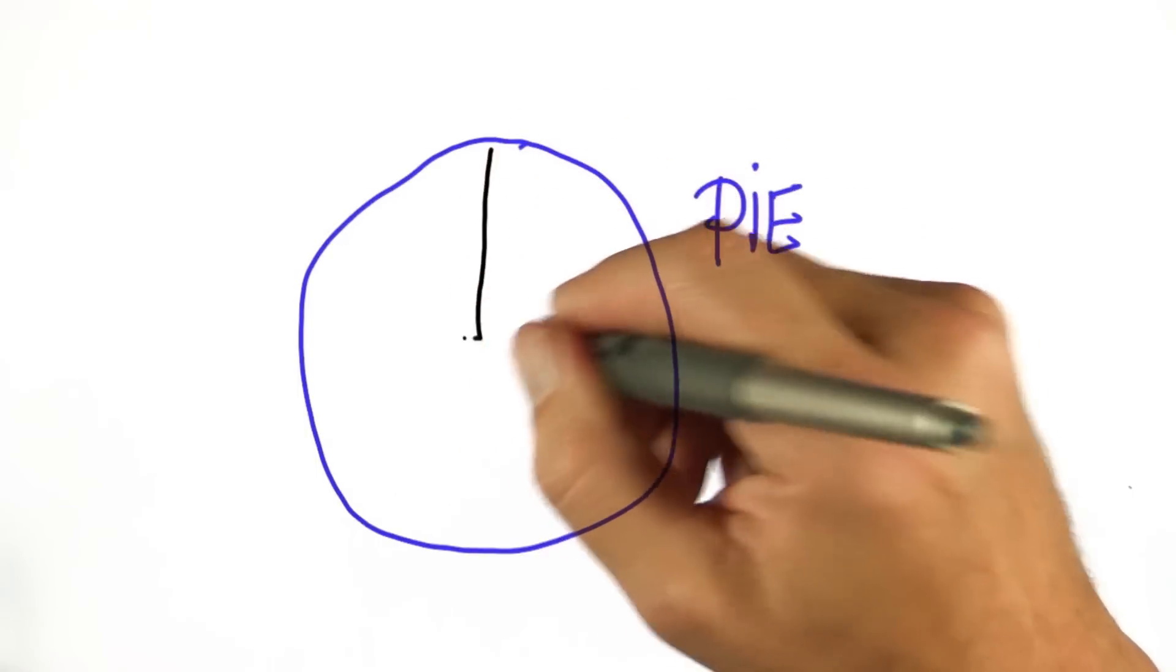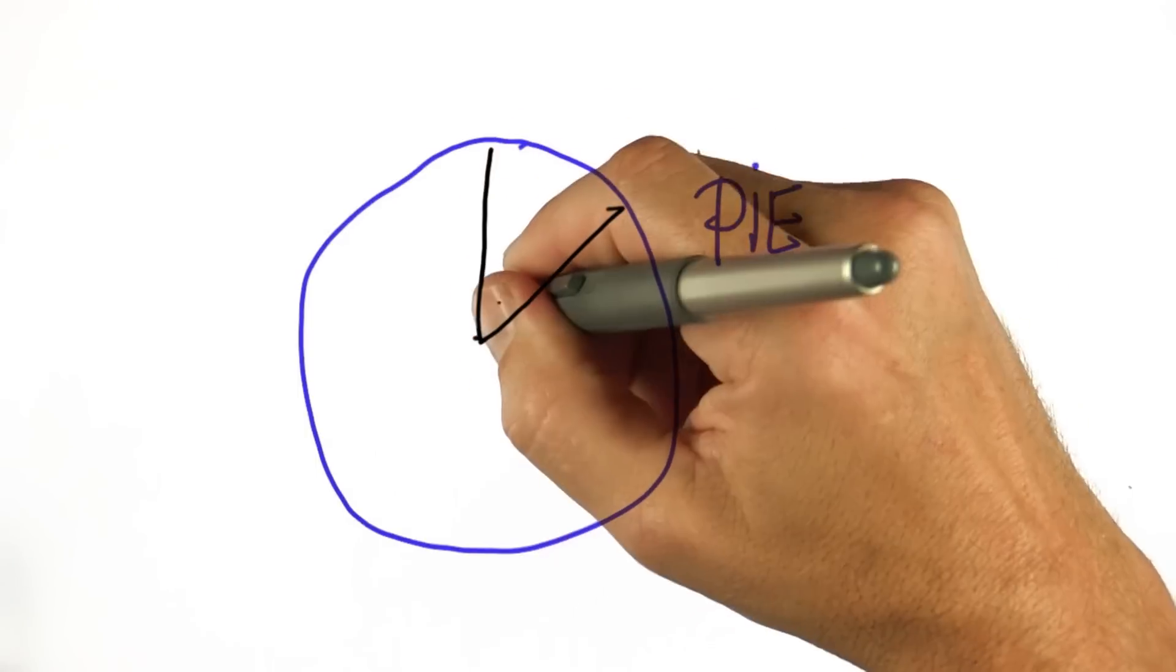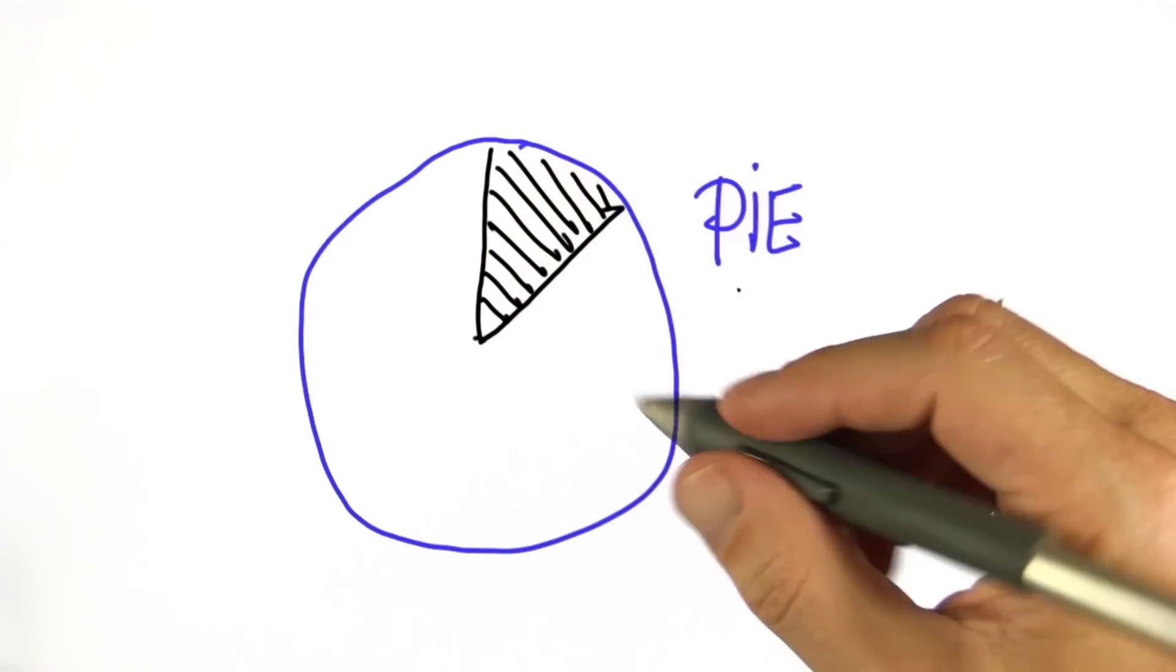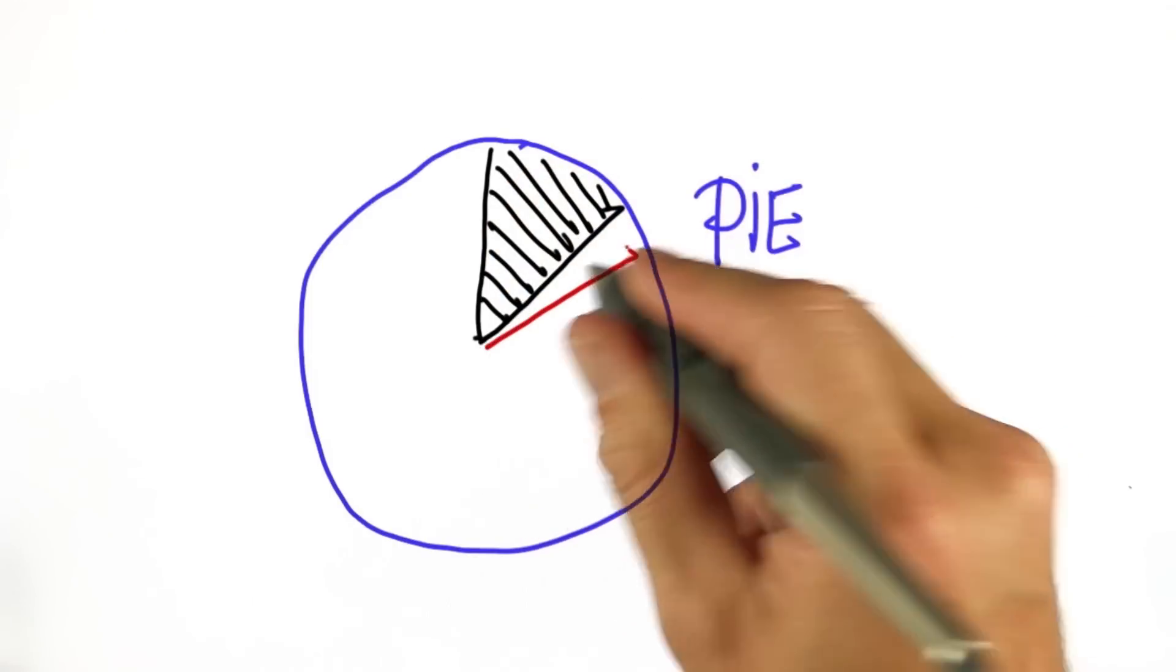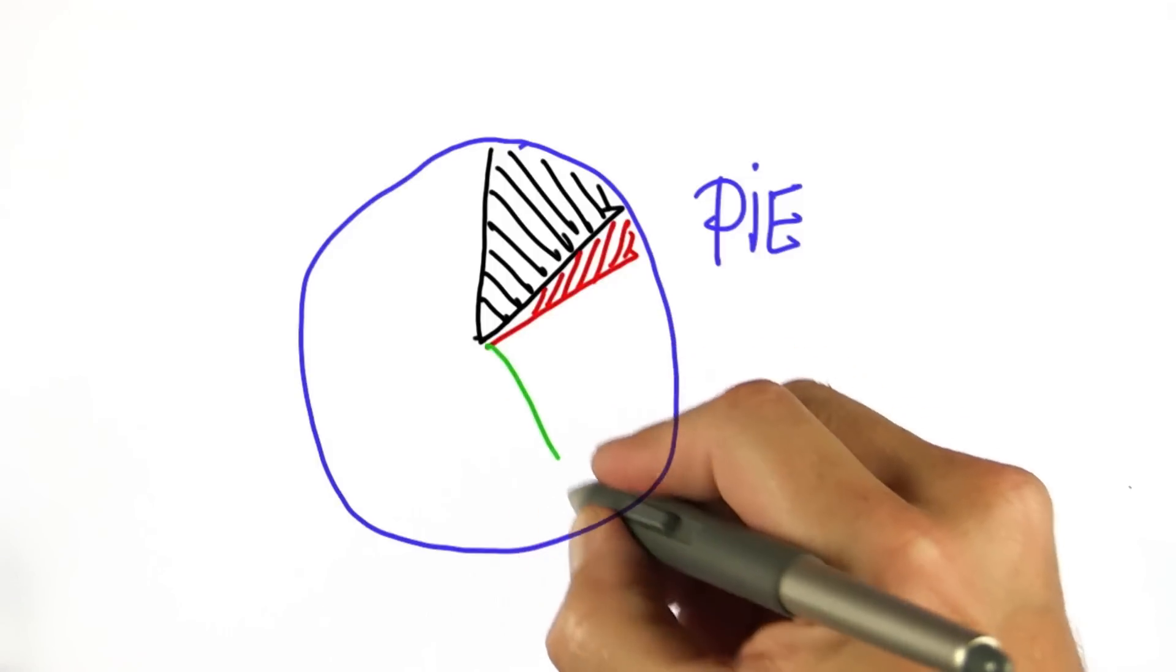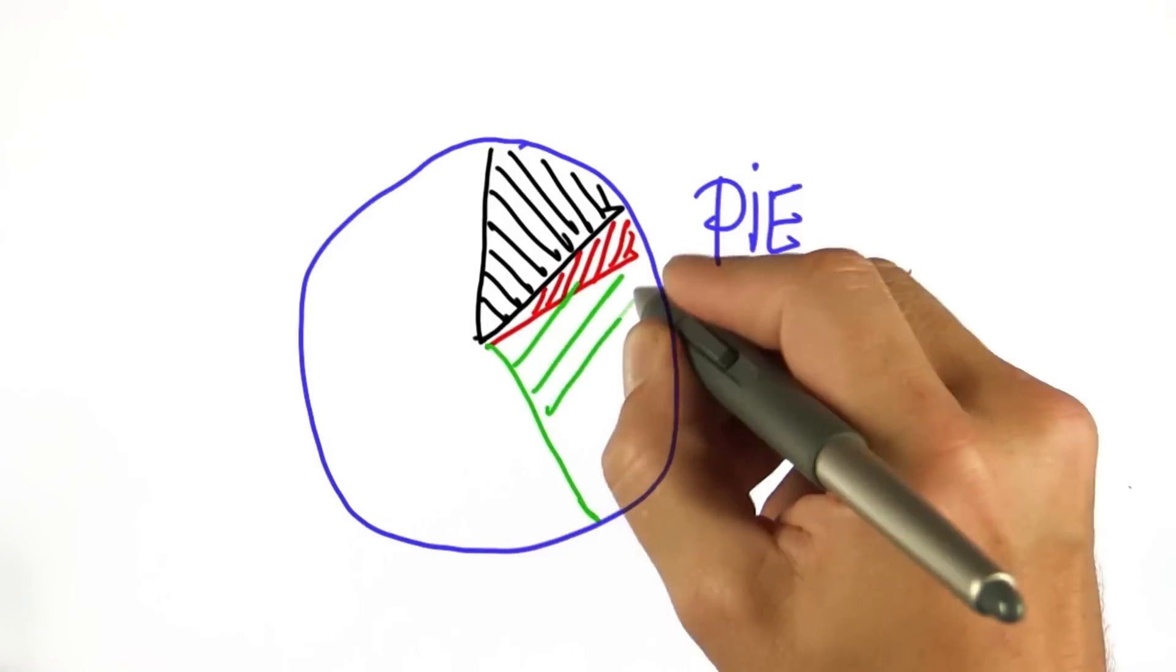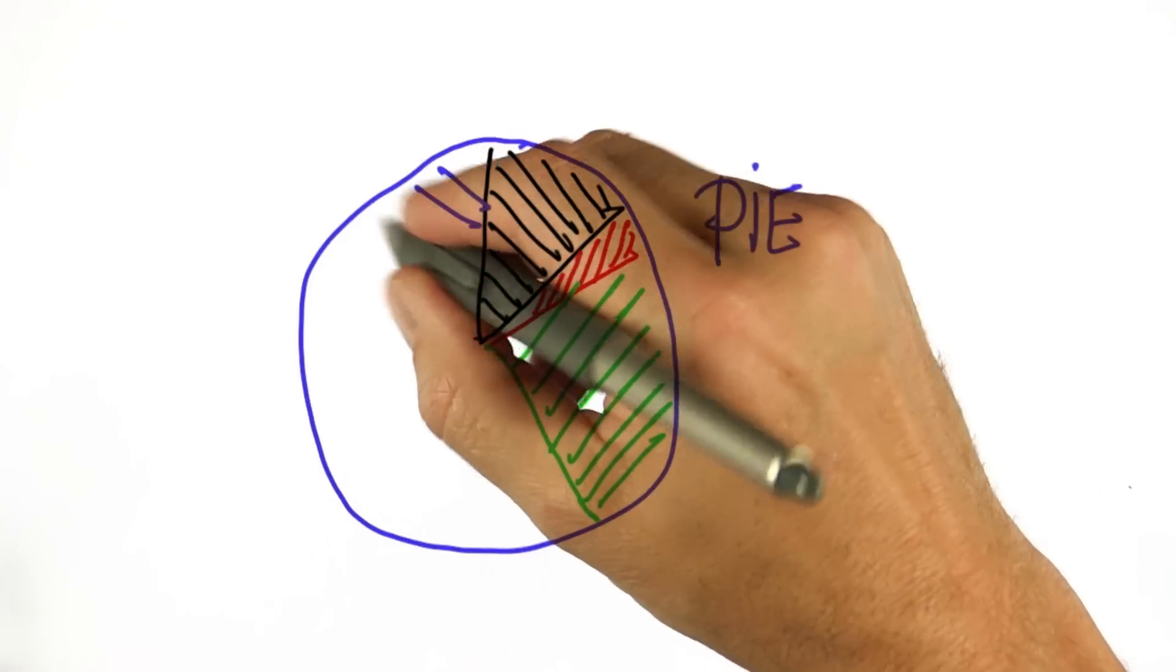So now here comes Sebastian and cuts out his first piece of the pie. What results is a pie with a missing piece. And then my wife comes, and she eats just a small piece. But my brother eats a very big piece. So only the following pie is left.